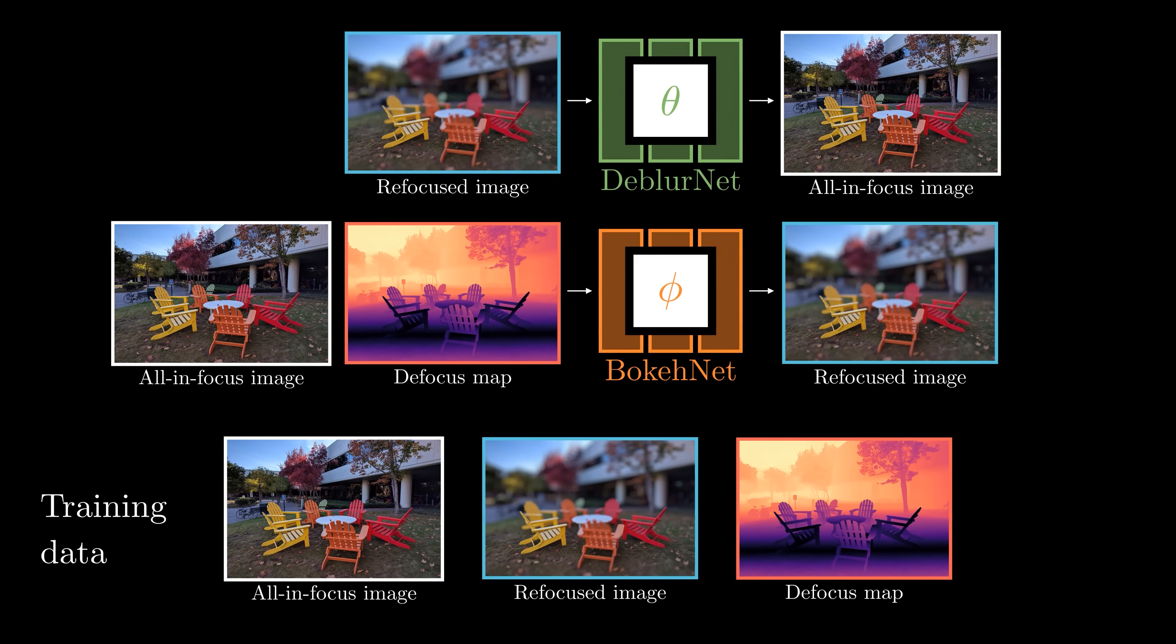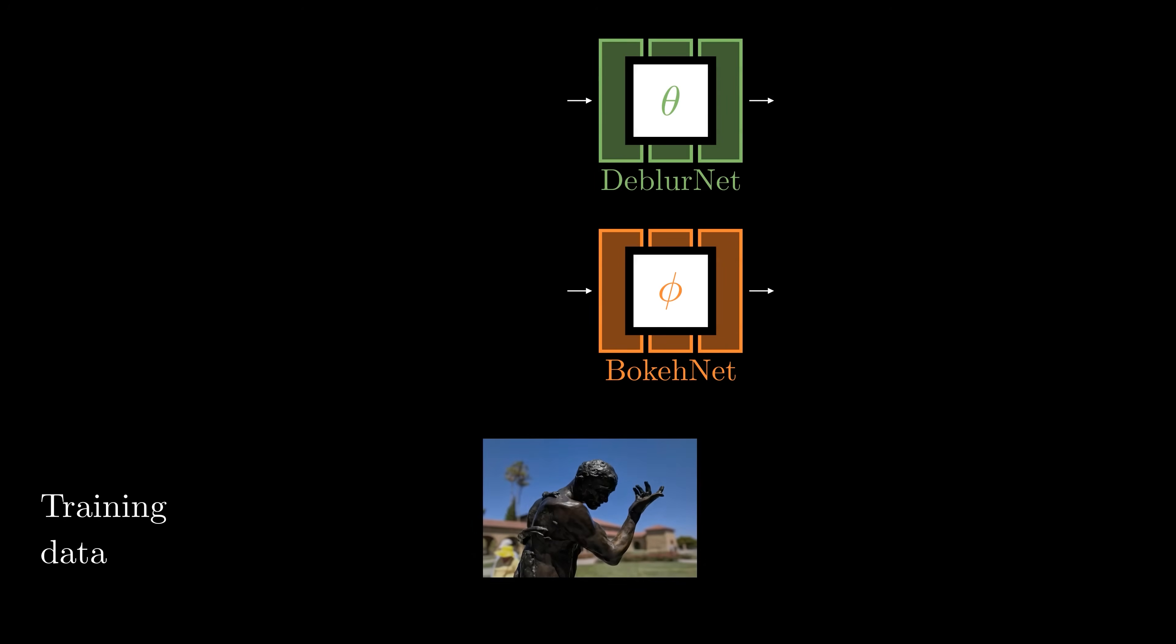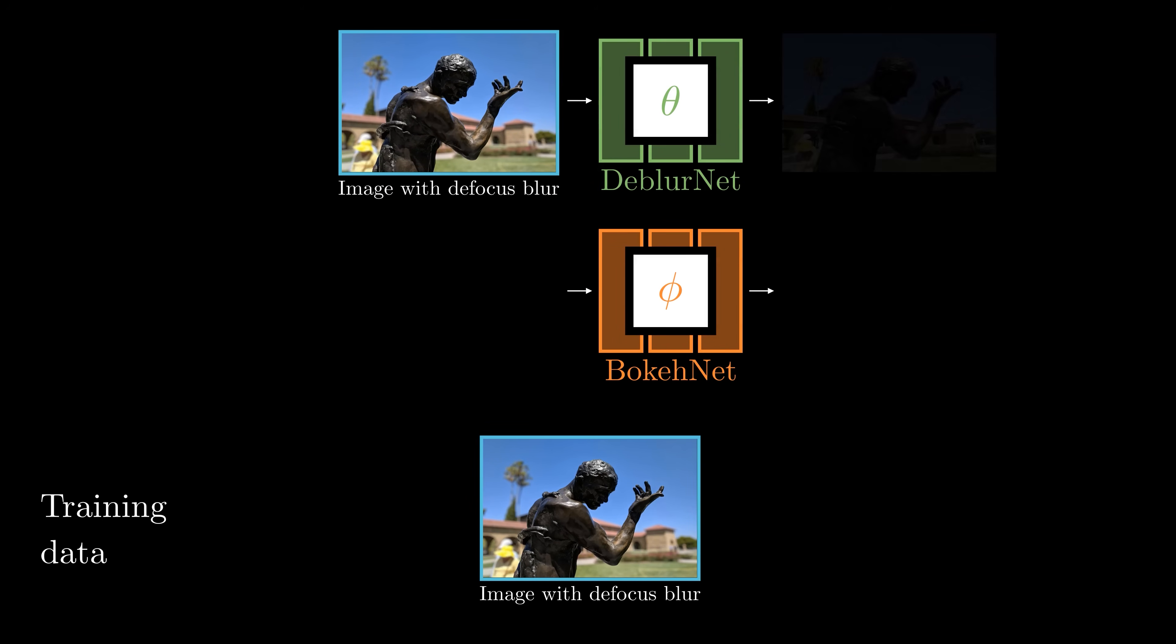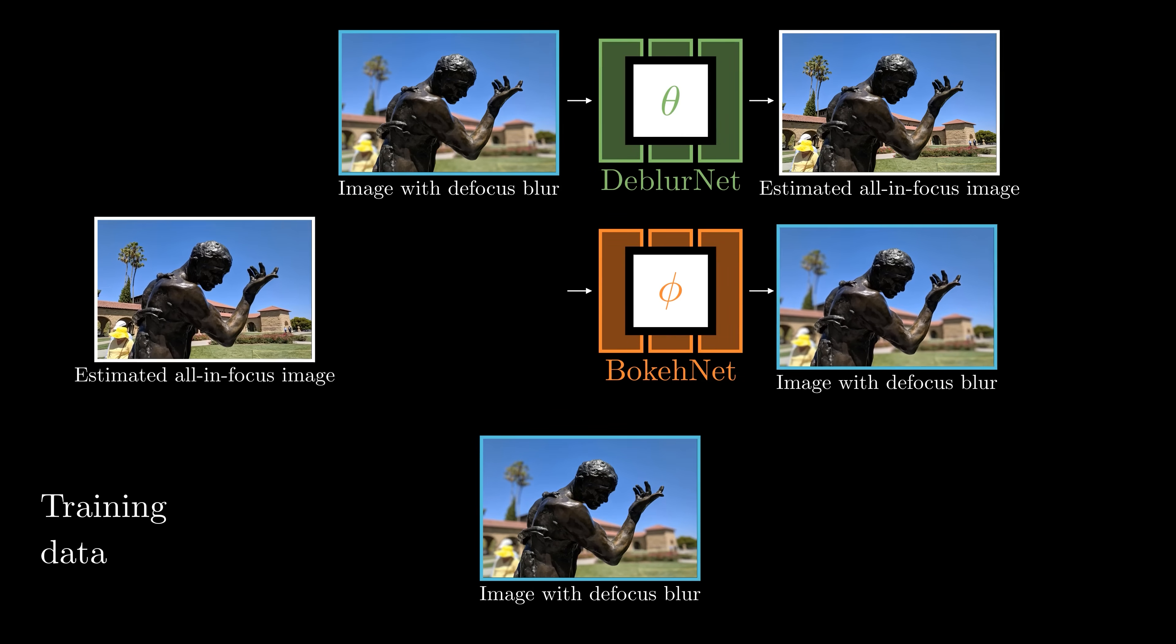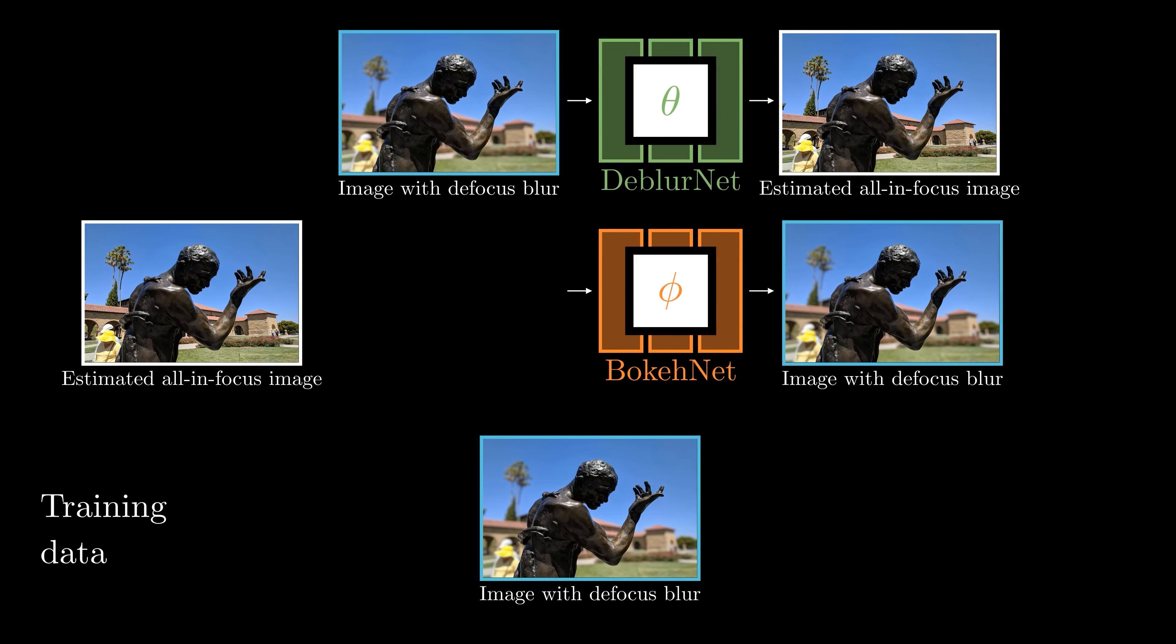We train our model by fine-tuning a pre-trained text-to-image model, leveraging its strong generative prior. Now the problem of the second model is that all the target refocus images are synthetic. As a result, the model struggles to generate the natural appearance of real images with defocus blur. To mitigate this problem, we use a dataset of real images with defocus blur. We use our trained defocus blur net to estimate the all-in-focus image. We then use the estimated all-in-focus image as input to train the bokeh net to synthesize realistic defocus blur.